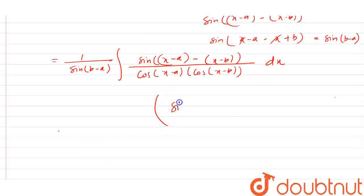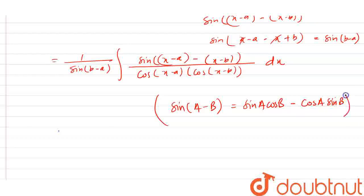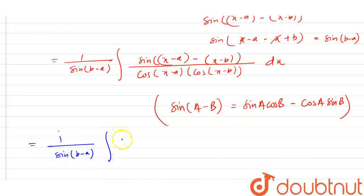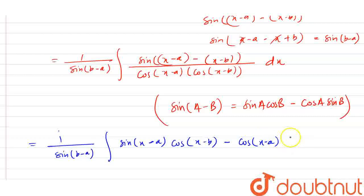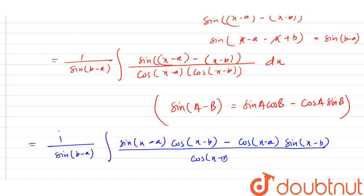We know the formula: sin(A minus B) equals sin A cos B minus cos A sin B. Using this formula, we write the integration as 1 divided by sin(b minus a) times the integration of [sin(x minus a) into cos(x minus b) minus cos(x minus a) into sin(x minus b)], whole divided by cos(x minus a) into cos(x minus b) dx.